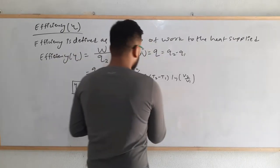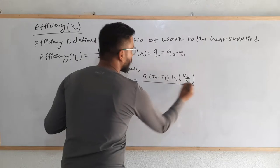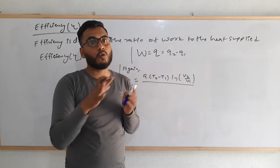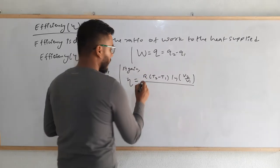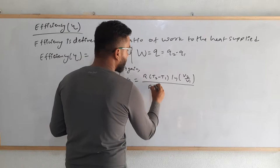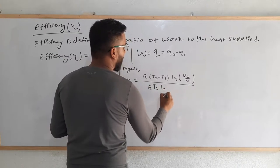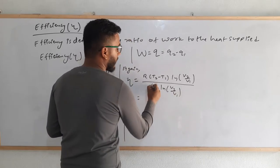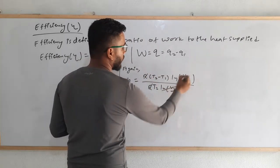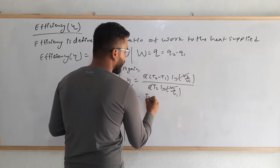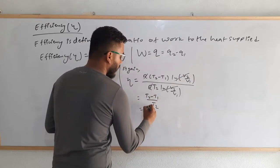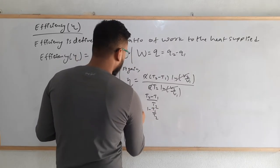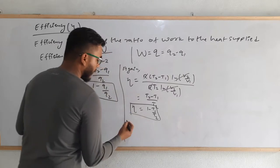And what is the value of Q2? Q2 means the heat energy supplied by the source to the system, which was given by the formula R T2 ln(V2/V1). Let's cancel R, these two values are cancelled. So it is T2 minus T1 by T2, which is equal to 1 minus T1 by T2.